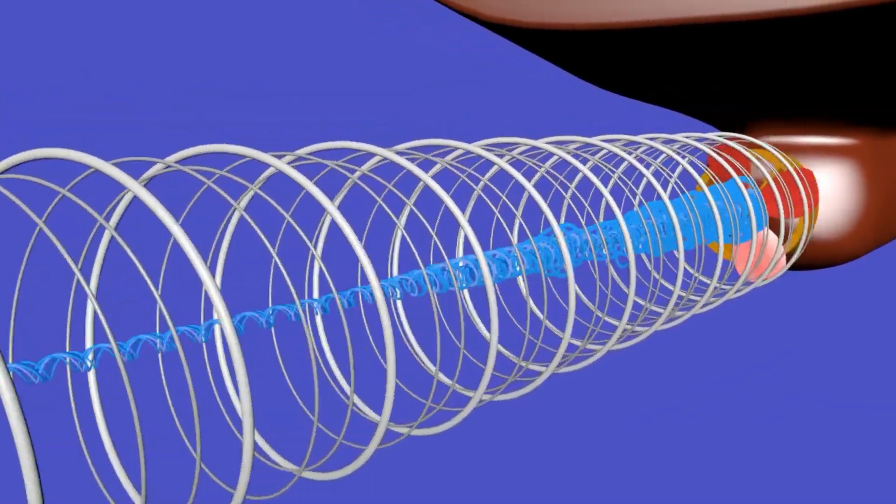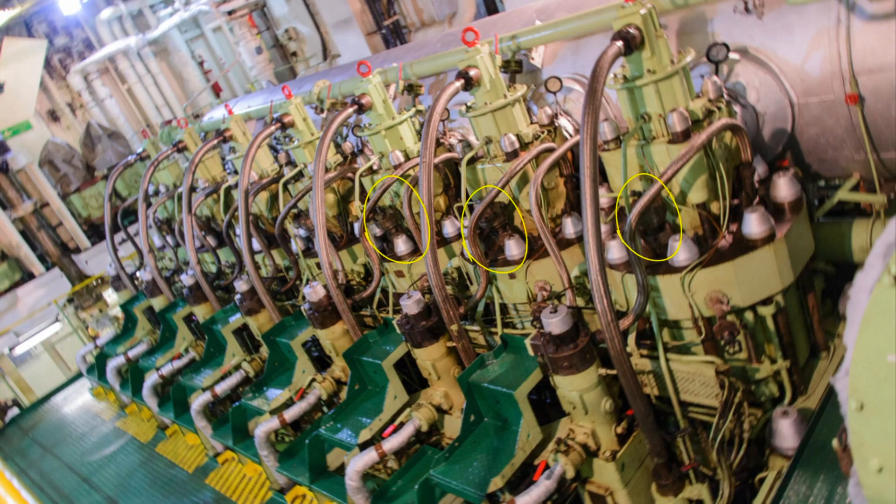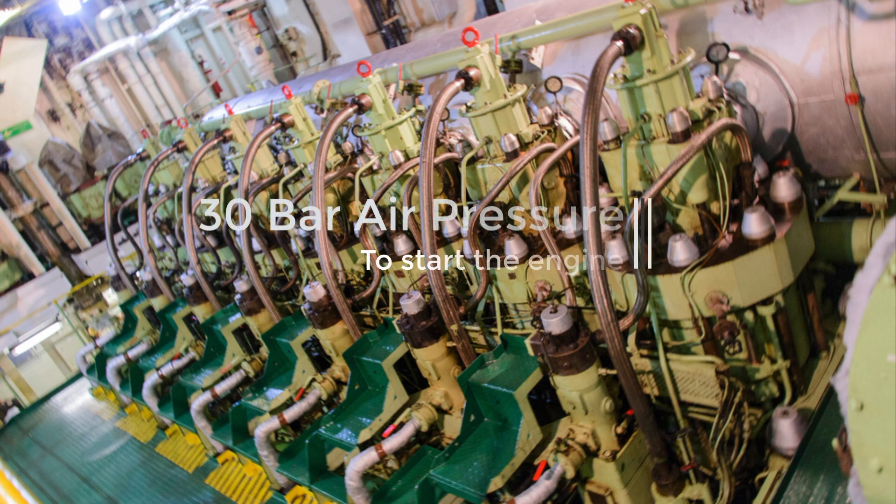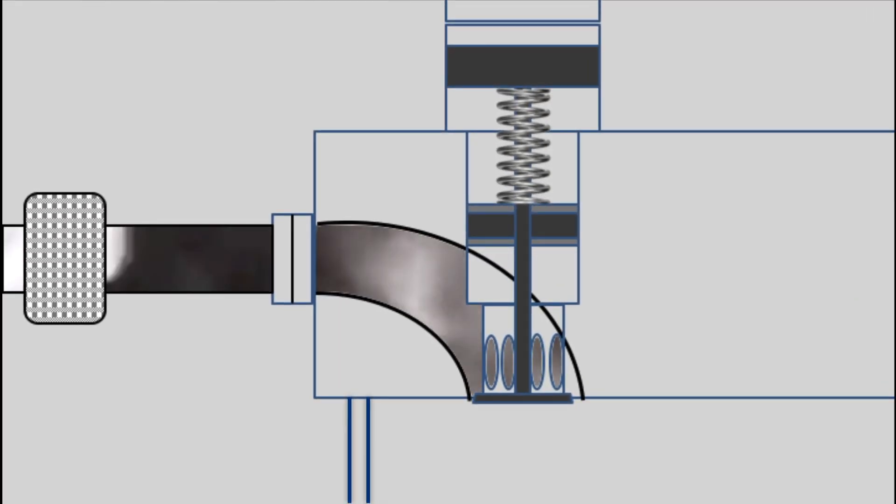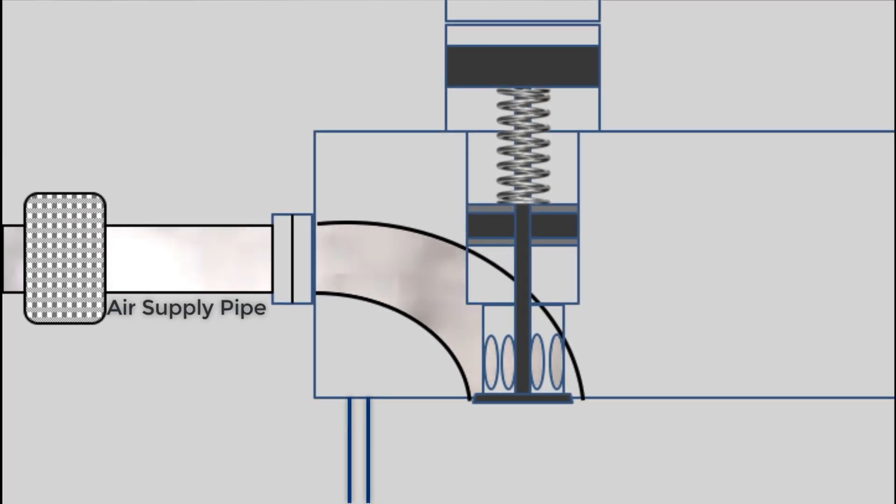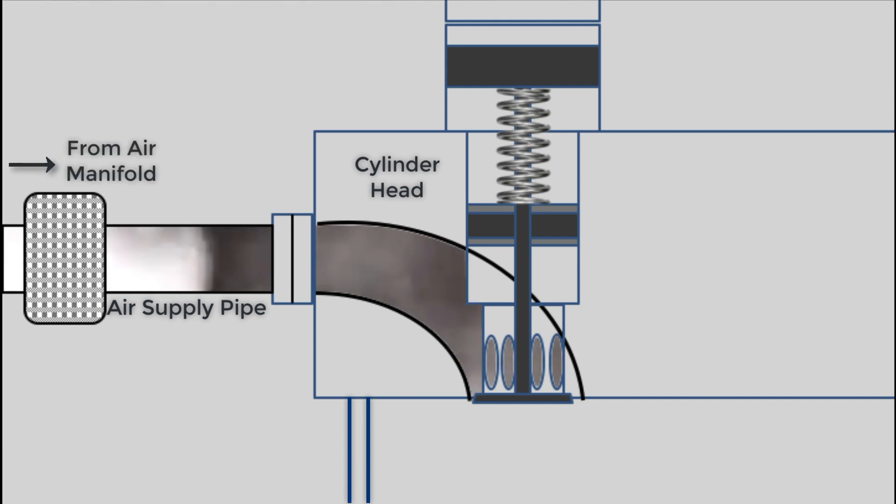The air starting valve is fitted at the center of each cylinder head, controlling the air supply to the combustion chamber at 30 bar pressure. The air supply pipe is connected to the cylinder head from the air manifold, which opens inside the cylinder head where the air starting valve is fitted.